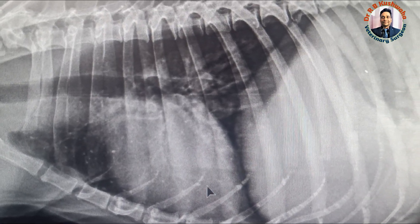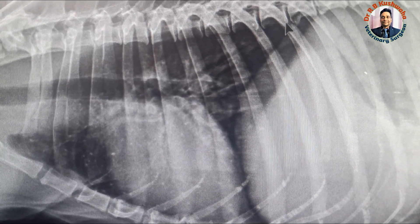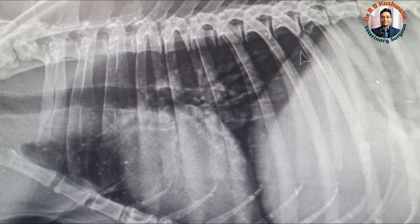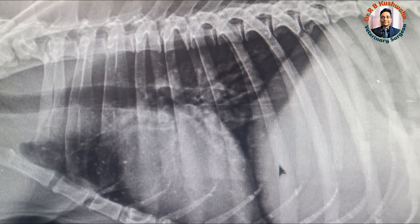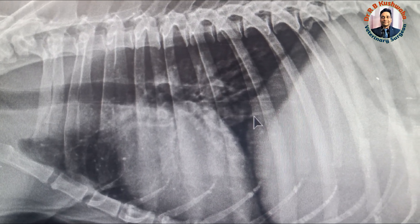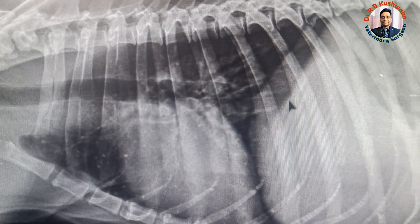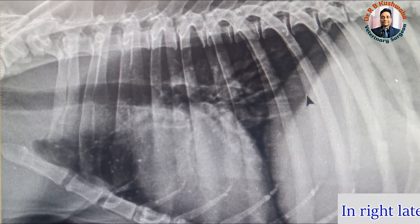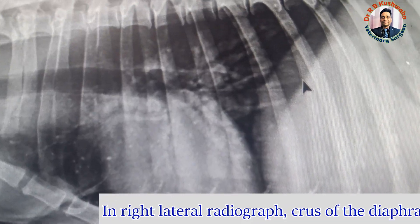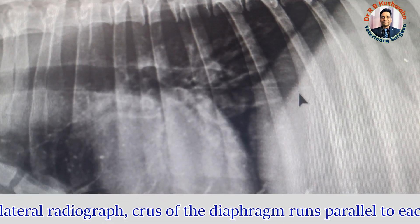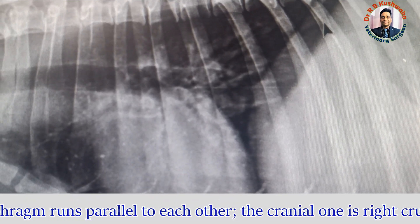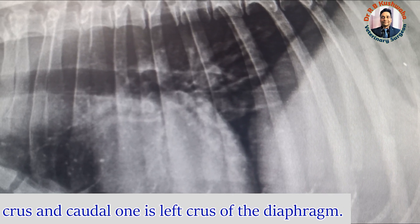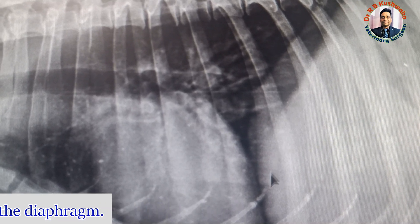Now look at this particular radiograph. This radiograph has also been taken in lateral recumbency. But if you see, the crura of the diaphragm — this is one crus and this is the other — they are not crossing each other at the caudal vena cava level. The caudal crus runs parallel to the cranial one. If the crura of the diaphragm run parallel, that means this particular radiograph was taken in right lateral recumbency. So the cranial crus is the right crus of the diaphragm and the caudal one is the left crus.